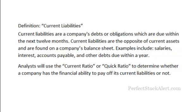Today we're going to be looking at the definition of current liabilities. As I do in each one of these fundamental analysis tutorial videos, I'll give you the actual definition and then we'll go on to look at an example and give you a little more insight into how it's actually used and what it actually means. Current liabilities are a company's debts or obligations which are due within the next 12 months. Current liabilities are the opposite of current assets and are found on a company's balance sheet.